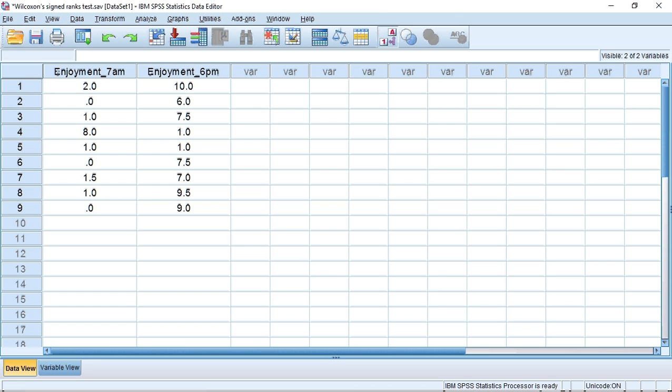The Wilcoxon signed rank test for matched pairs is done in a similar manner. I've entered the data from table 11.2 into SPSS in two columns. SPSS knows which two samples came from which individual, because they're in the same row. To perform the test, go up to Analyze and click.